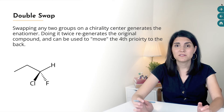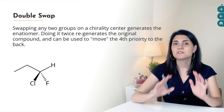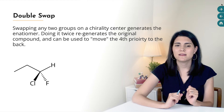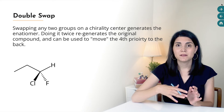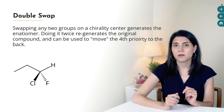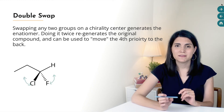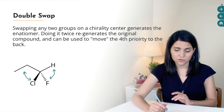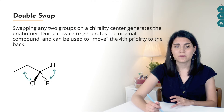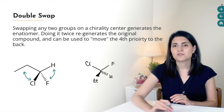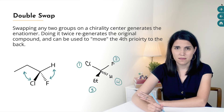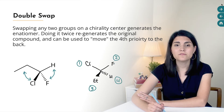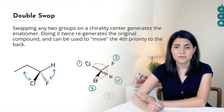Another option is the double swap trick. Because swapping two groups on a chirality center generates the enantiomer, doing a second swap regenerates the original molecule. You can use this to get the fourth priority group onto a dashed bond. In this example, swap the hydrogen and the fluorine, and also swap the ethyl and the chlorine. Now chlorine is priority one, fluorine two, ethyl three, and this chirality center has the R configuration.